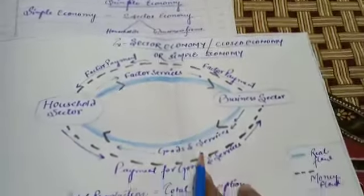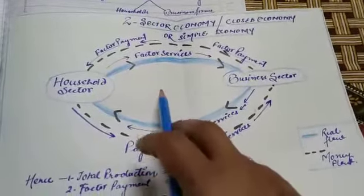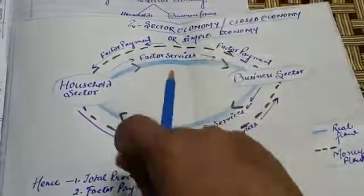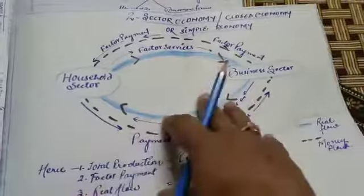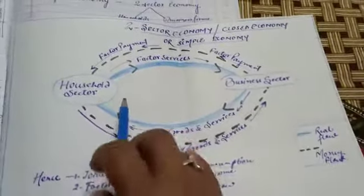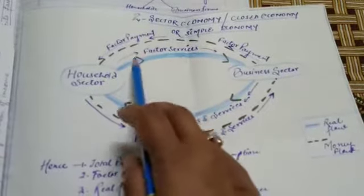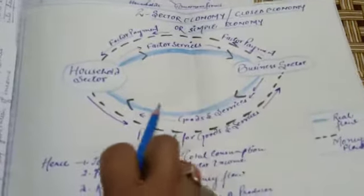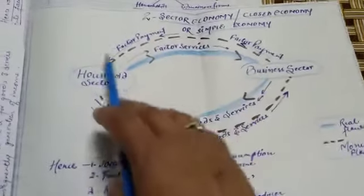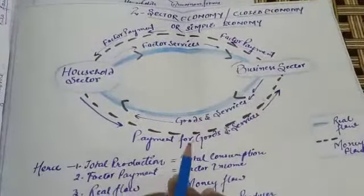Good evening students. Yesterday we had learnt about the circular flow of income between two sectors of an economy, or the circular flow of income in a simple economy. In that circular flow we understood how factor services and goods and services are exchanged between two sectors, and how factor payments and consumption expenditures are exchanged between those two sectors.